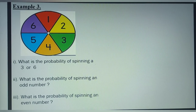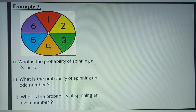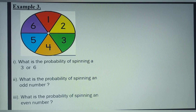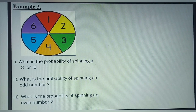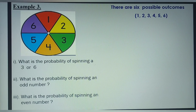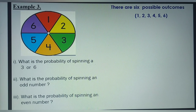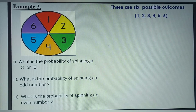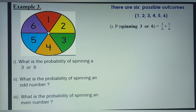Example 3. You have a spinner numbered from 1 to 6, and you are required to find the probability of spinning a 3 or a 6. Since the spinner is numbered from 1 to 6, the total number of possible outcomes equals 6. The probability of spinning a 3 is 1 over 6, and the probability of spinning a 6 is also 1 over 6. Adding them gives 2 over 6, which simplifies to 1 over 3.